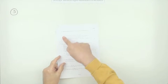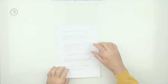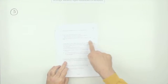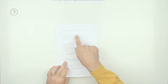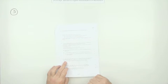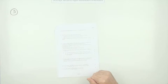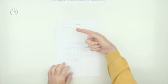Number five from the 2016 Advanced Higher Mathematics mechanics paper — a five-mark question on simple harmonic motion. There is a formula sheet provided.